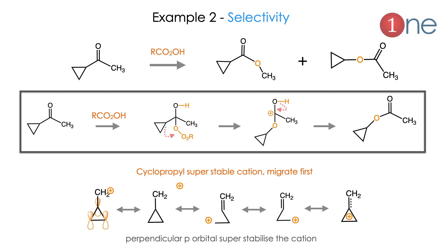The second example: cyclopropyl methyl ketone. Two product possibilities exist — which group migrates? Everyone might guess methyl, but the cyclopropyl group is very stable due to its perpendicular p-orbital towards the cation, giving resonance stabilization. As seen in the diagram, the cyclopropyl group migrates. The mechanism is the same: peracid attack, then C–O bond forms, the cation is stabilized by the cyclopropyl group, and finally the ester product forms.